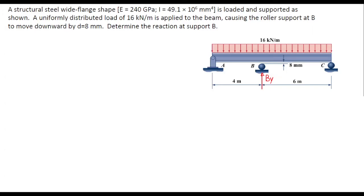Structural steel wide flange shape with the modulus of elasticity of 240 gigapascal and the moment of inertia of 49.1 times 10 to the 6 millimeter to the fourth is loaded and supported as shown in the figure.